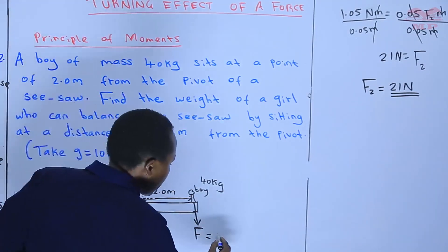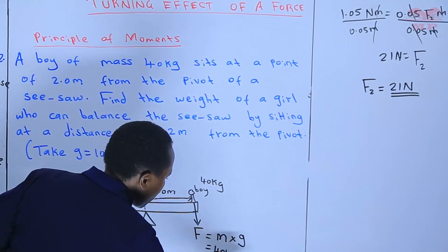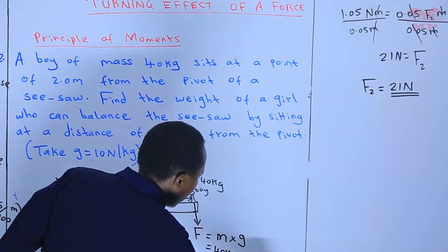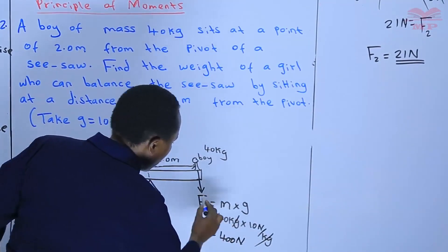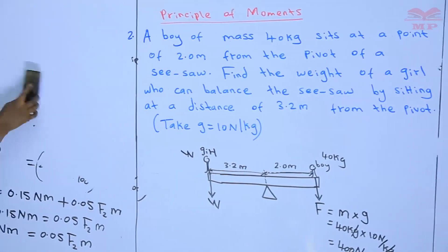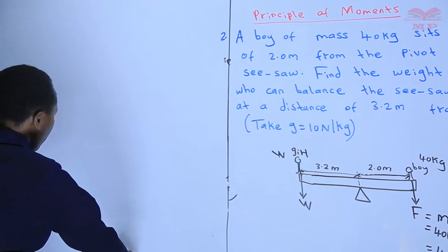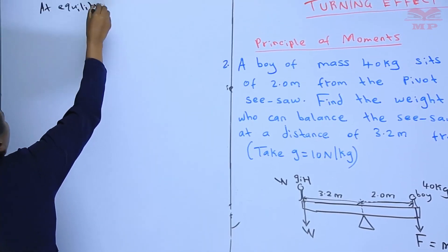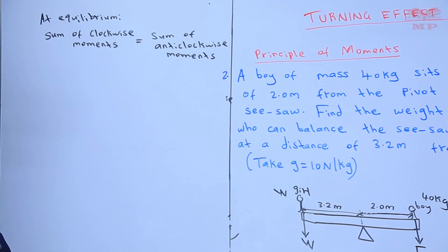From form one, we learned that force is given by mass multiplied by the gravitational force. The mass of the boy is 40 kilograms, and the gravitational force is 10 newtons per kilogram, so 40 × 10 = 400 newtons. The force exerted by the boy is 400 newtons. Since the seesaw is at balance, we state the principle of moments: at equilibrium, the sum of clockwise moments is equal to the sum of anticlockwise moments.